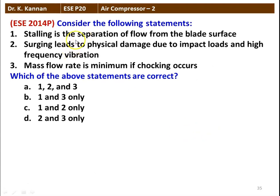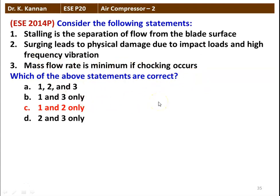The next question is from the 2014 question paper. Consider the following statements: (1) Stall is the separation of flow from the blade surface; (2) Surging leads to physical damage due to impact load and high frequency vibration; (3) Mass flow rate is minimum if choking occurs. Statements 1 and 2 are correct. Stall is indeed the separation of flow from the blade surface. Surging causes vibration of the machine, leading to physical damage. Statement 3 regarding choking is not correct.